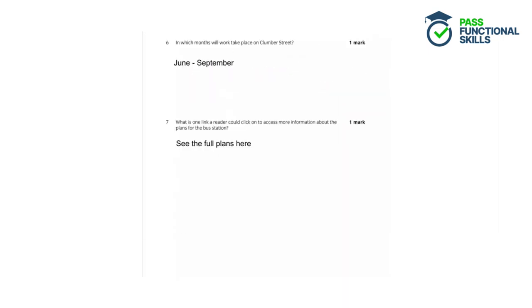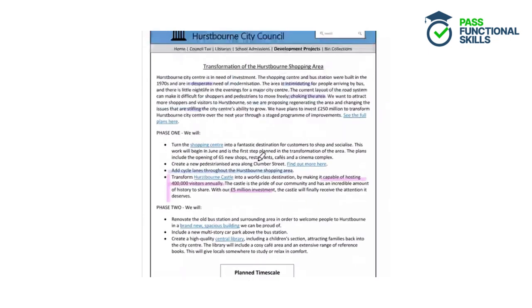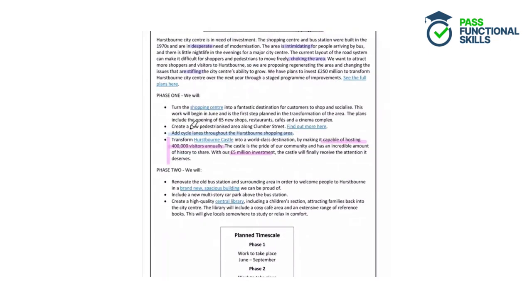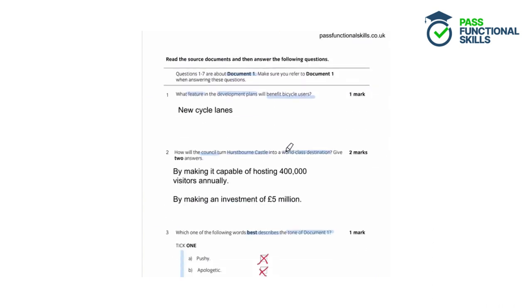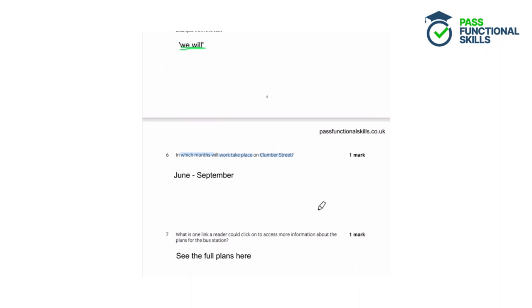Question 6: In which months will work take place on Clumber Street? We just need to identify information from document one — which months work will take place on Clumber Street. Scanning the text, Clumber Street is mentioned where it says they will create a new pedestrianised area along Clumber Street, and this will happen in phase one. Looking at the planned timescale box, phase one will take place from June to September. So the changes to Clumber Street will happen from June to September.